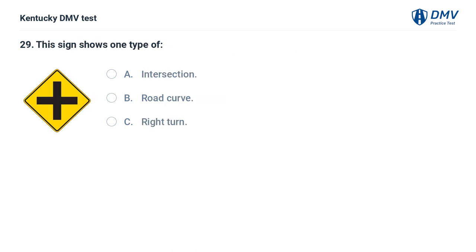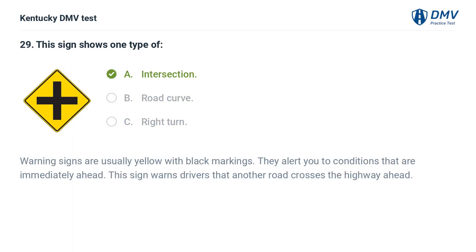This sign shows one type of: A. Intersection. B. Road curve. C. Right turn. The correct answer is A, intersection. Warning signs are usually yellow with black markings. They alert you to conditions that are immediately ahead. This sign warns drivers that another road crosses the highway ahead.